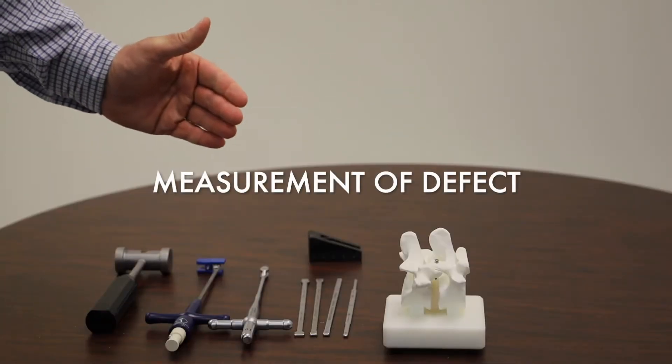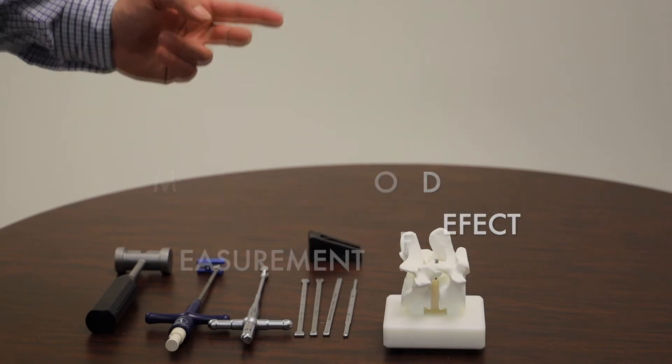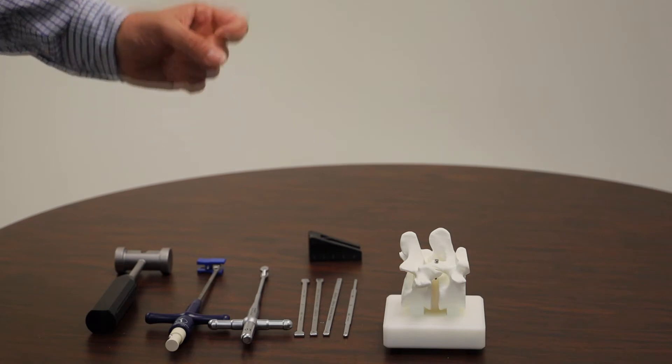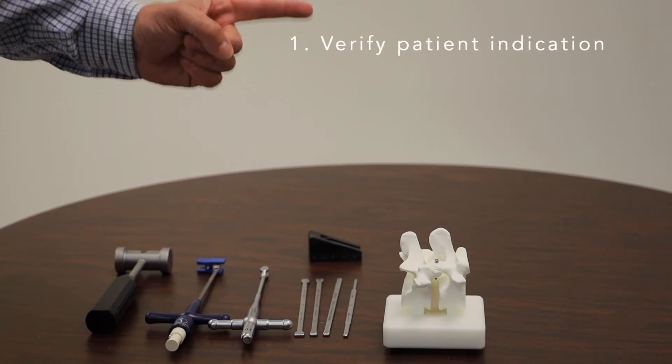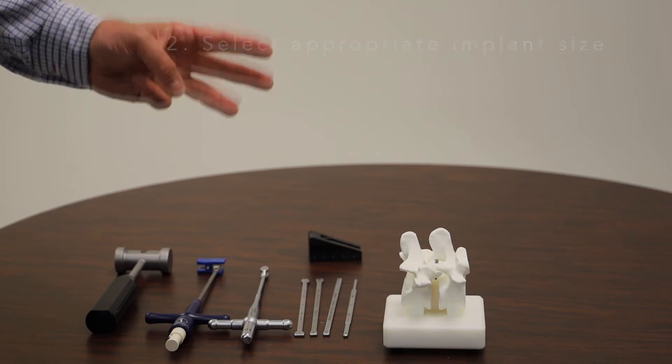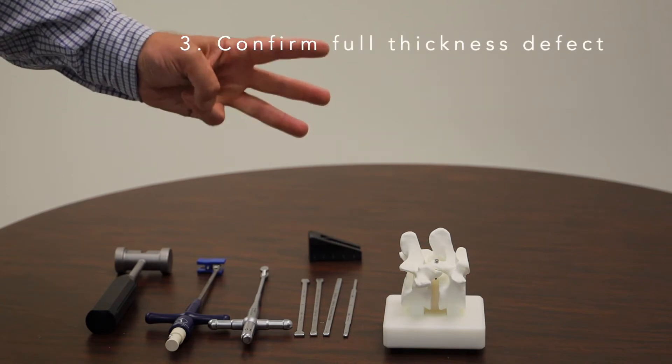After your discectomy, the first step of the Barricade procedure is to measure the defect. There are three goals with this phase. The first is to see if the patient is indicated. The second is to pick the appropriate implant size. And the third is to confirm that you have a full thickness defect.